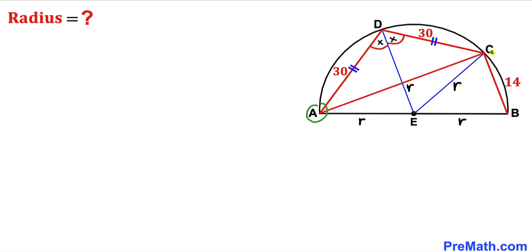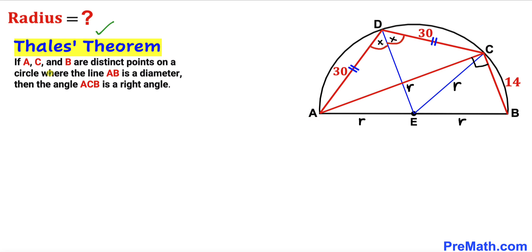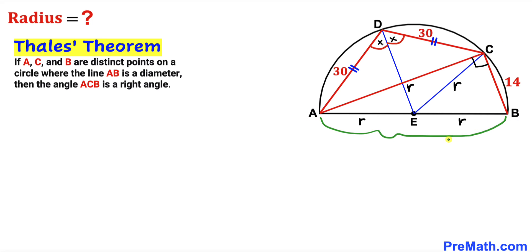I have connected point A with point C to get line AC. Let's recall Thales' theorem: if A, B, and C are distinct points on a circle where AB is the diameter, then angle ACB is a right angle. In our diagram we have three distinct points A, B, and C on the circle, and AB is the diameter of the semicircle, so angle ACB is 90 degrees.